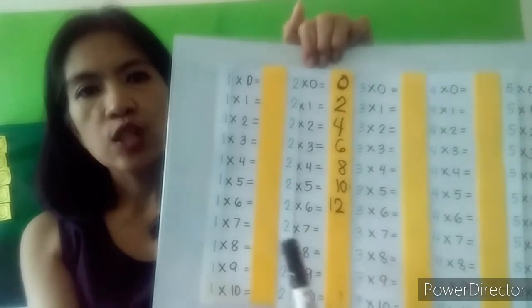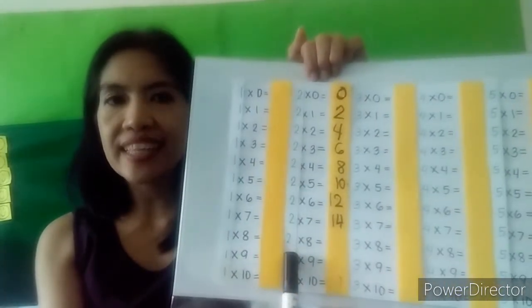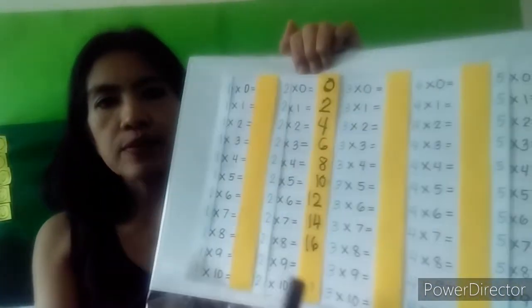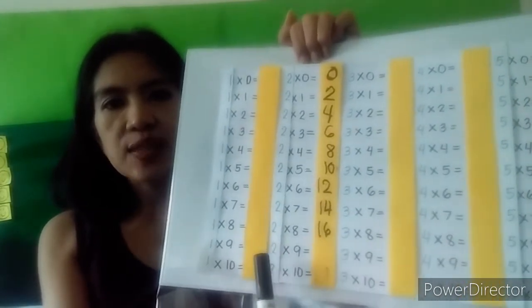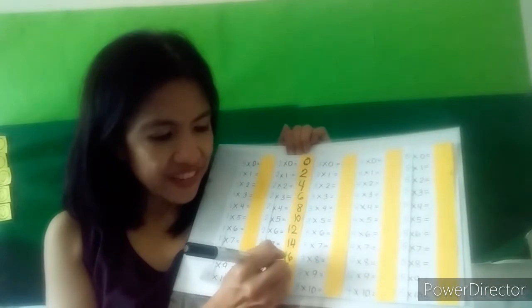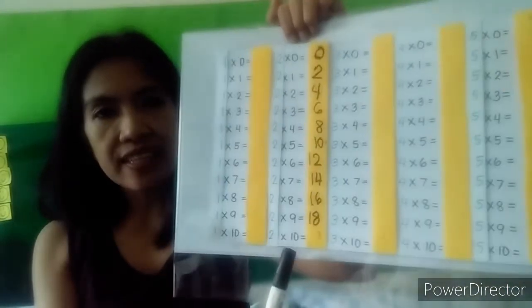Two times seven: twelve plus two equals fourteen. Good job! Two times eight: fourteen plus two equals sixteen. Two times nine: sixteen plus two equals eighteen. So two times nine is eighteen. Two times ten: eighteen plus two equals twenty. So two times ten is twenty.